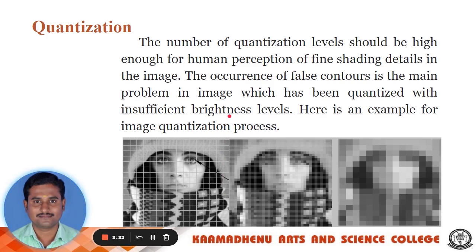The number of quantization levels should be high enough for human perception of fine shading details in the image. The occurrence of false contours is the main problem in images that have been quantized with insufficient brightness levels. Here is an example of the image quantization process showing three different pictures: a raw analog image, the digitization concept applied to it, and the resulting digital image where the various intensity levels have been digitized using sampling and quantization techniques.